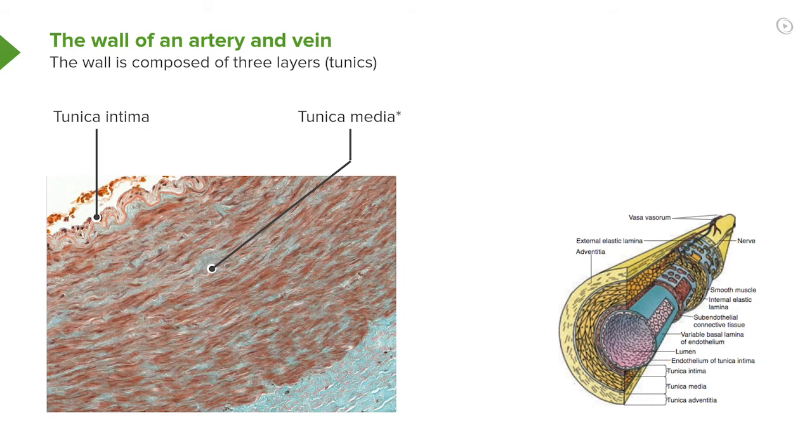The middle layer is called the tunica media. The tunica media has a little star next to it or an asterisk. And that is to remind you that this is the coat.